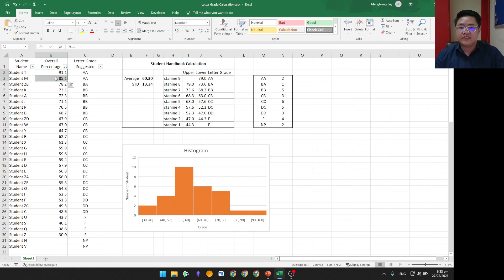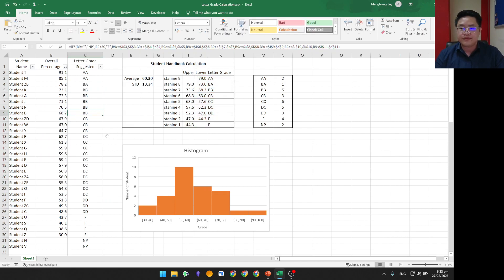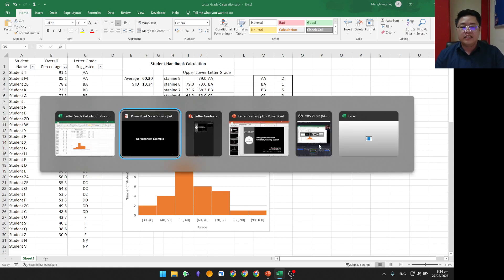As you can see, these two students, their percentage is higher than 79.0, so they got AA and so on. If you wonder, this cell is just a bunch of if functions. And these students, they fail. And the two who did not show up for their final assessment, they earned letter grade NP. NP stands for not present. This is just some overall summary. Two students got AA and so on. Now, let's head back to our presentation.